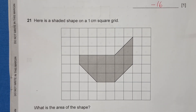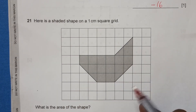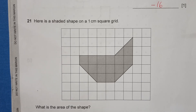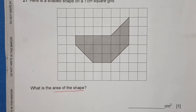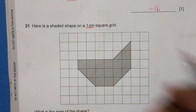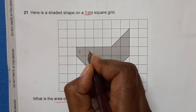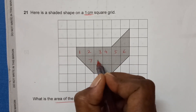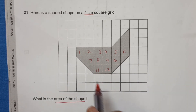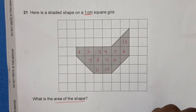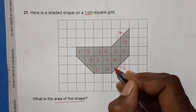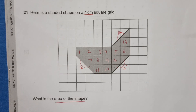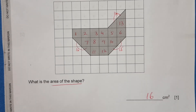Question 21: here is a shaded shape on a 1 centimeter square grid. We need to find the area by counting the squares. Counting full squares: 1 through 13. Then pairing up half squares: joining halves gives us 14, 15, and 16. So the final area is 16 square centimeters.